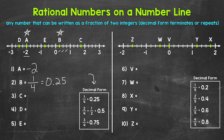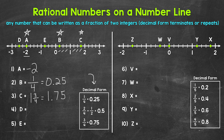Moving on to number three, we have point C between one and two. We have one and one fourth, one and a half, and then one and three fourths. So point C is at one and three fourths on the number line, which as a decimal is 1.75 — one and seventy-five hundredths.